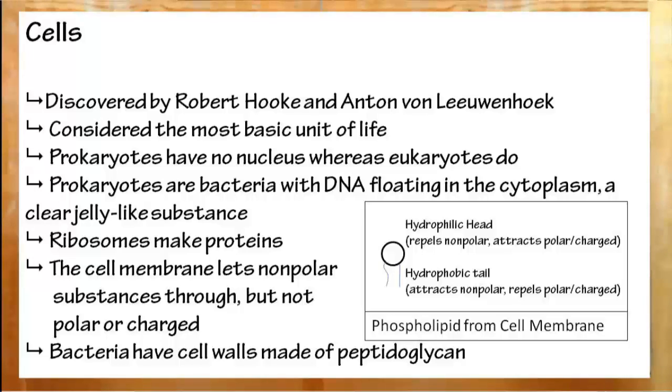Surrounding the prokaryotic cell is a cell membrane defining the boundaries. This is the same for all cells, and contains a phospholipid bilayer. The phospholipids have a hydrophilic head, which attracts water and polar substances but repels nonpolar substances, and hydrophobic tails, which do the opposite, attracting nonpolar substances but repelling polar substances. Fats and lipids find it easy to go straight through the membrane, whereas charged and polar substances usually have to go through proteins embedded in the membrane. Surrounding prokaryotic cells outside of the cell membrane is a cell wall, composed mostly of peptidoglycan.